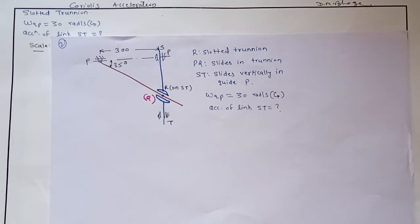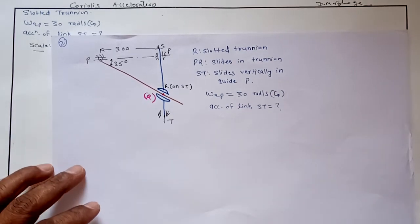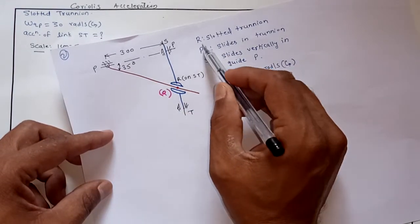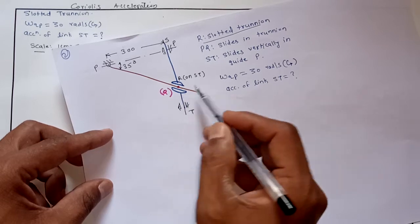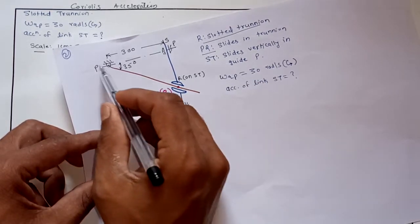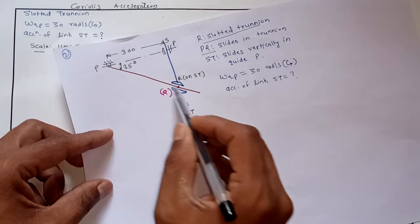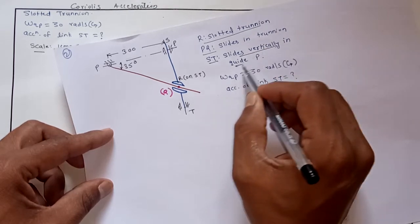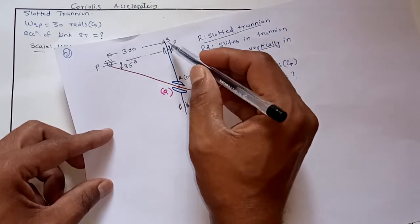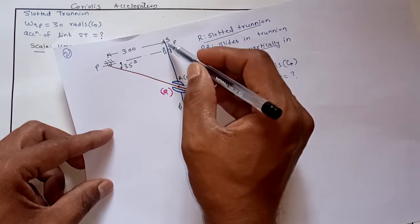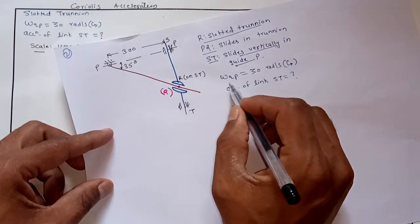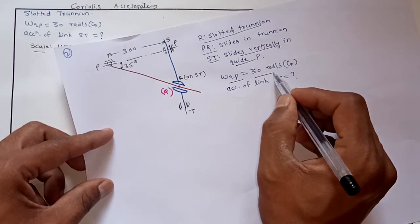Hello everyone, today we will solve one problem on Coriolis component of acceleration involving a trunnion joint. The given mechanism has R as the slotted trunnion. Link PQ, which is at 35 degrees with the horizontal, slides inside the trunnion R. Link ST slides vertically in the guide P, and link ST which carries trunnion R slides vertically inside guide P. The angular velocity of link PQ is given as 30 radians per second counterclockwise.